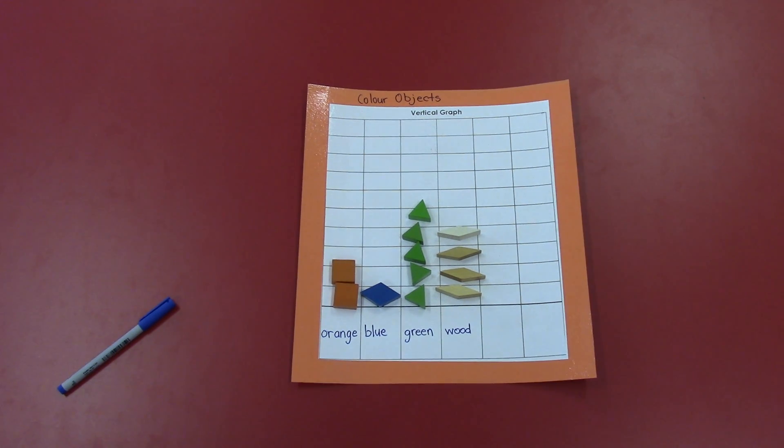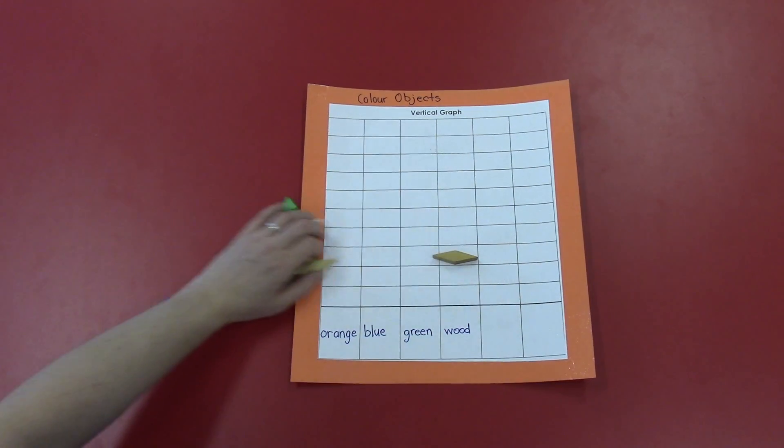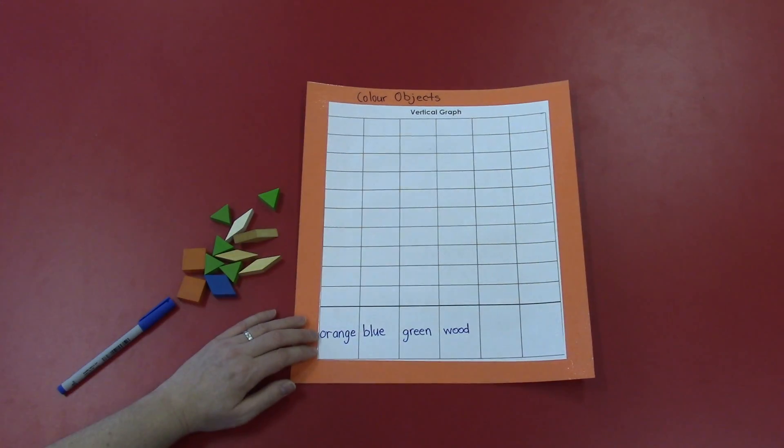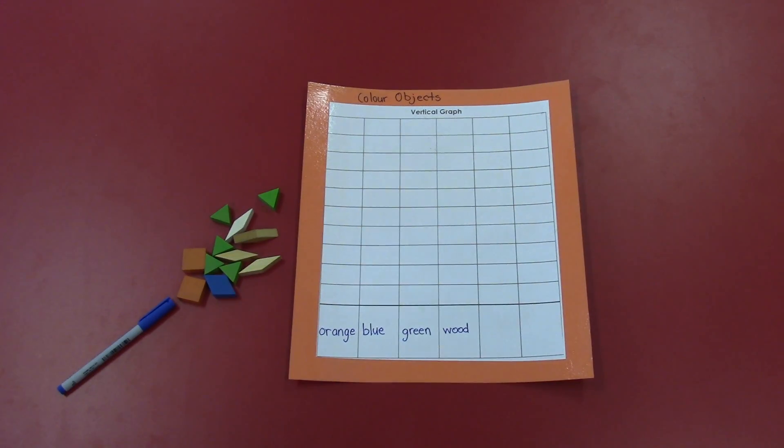Now go and make your own graph. Remember, a concrete graph needs real objects. I'm going to take my objects off my graph, and I'm going to erase my title and my labels, and I'm going to try a new graph. Enjoy!